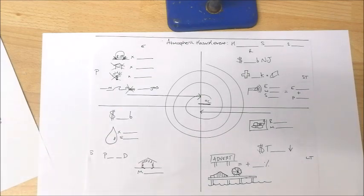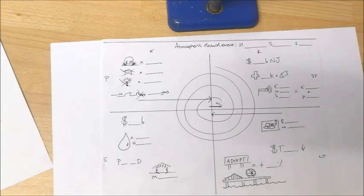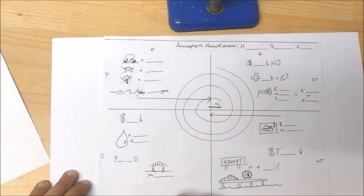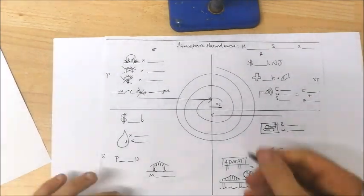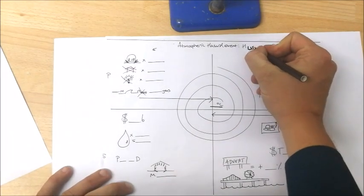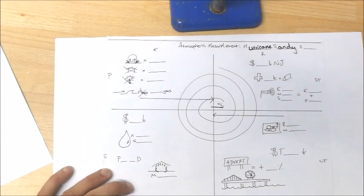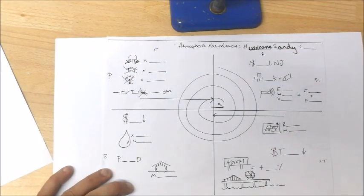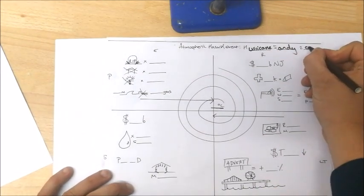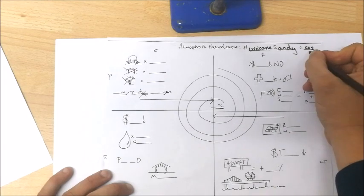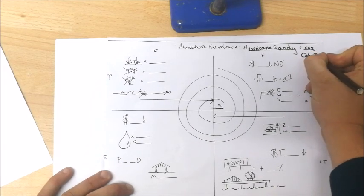Okay, so we're going to look at Hurricane Sandy now as our example of our atmospheric hazard event. Let me just quickly put that in up here, Hurricane Sandy, which occurred back in October 2012 and was a Category 3 hurricane.